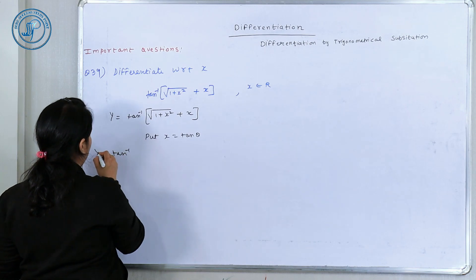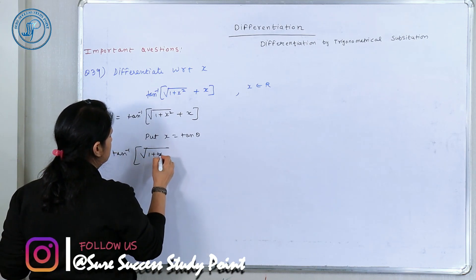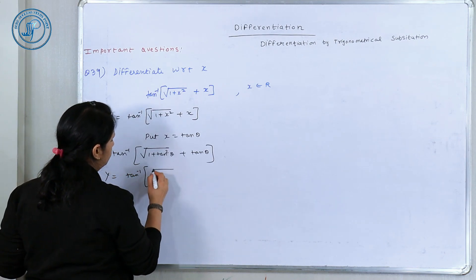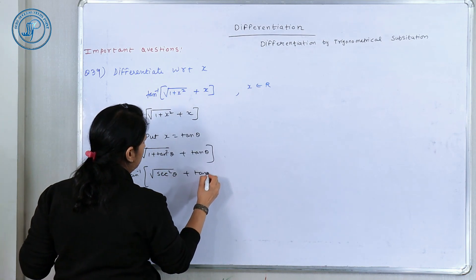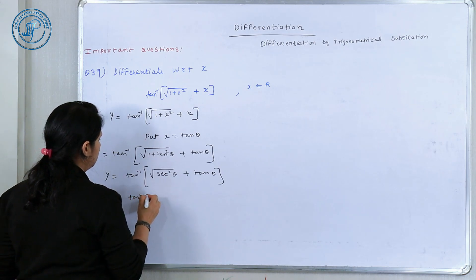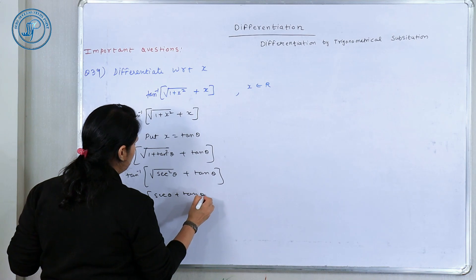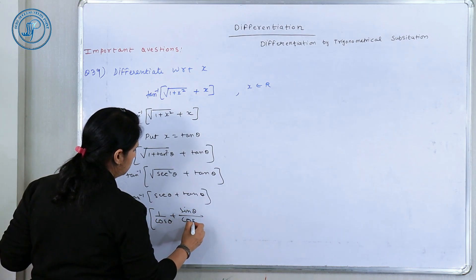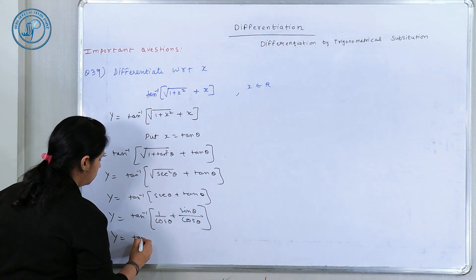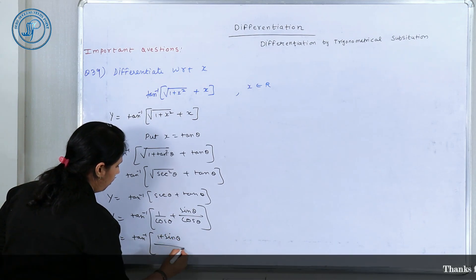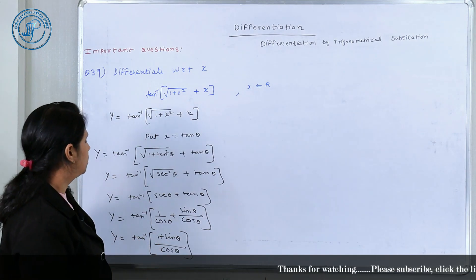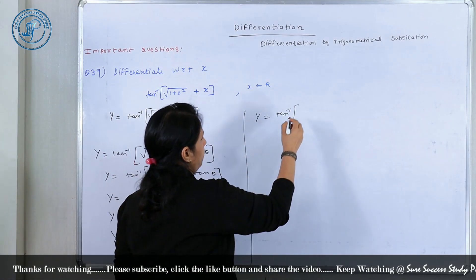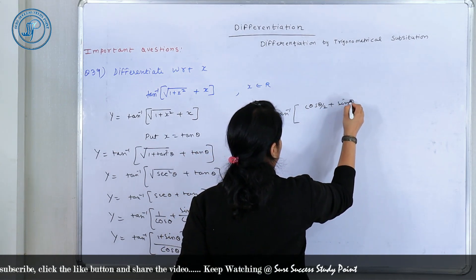So using this substitution, y = tan inverse of √(1 + tan²θ) + tan θ. Since I am replacing x with tan θ, under the root we get sec²θ, and then we have tan θ. So this becomes sec θ + tan θ, which I write as 1/cos θ + sin θ/cos θ. Replacing, y = tan inverse of (1 + sin θ)/cos θ. Now applying the magic 6 formulas: y = tan inverse of...